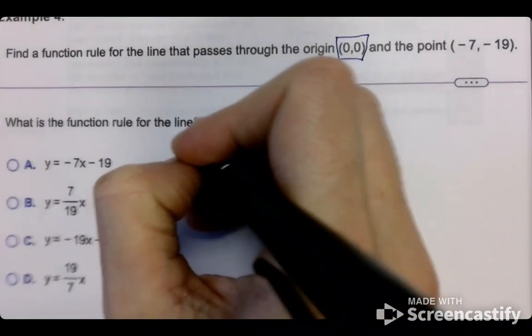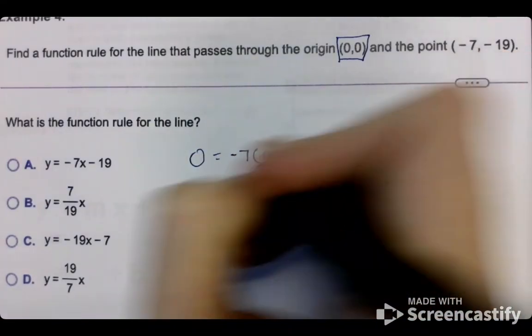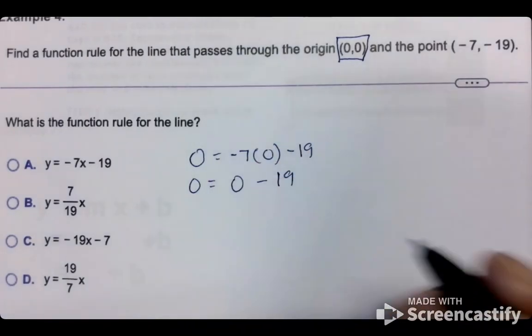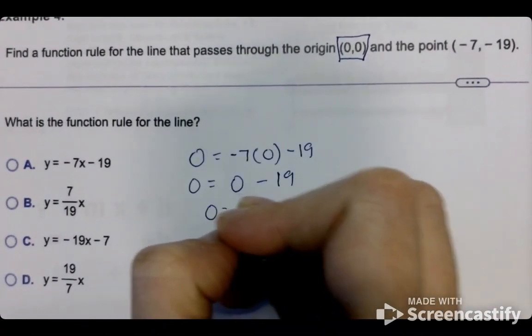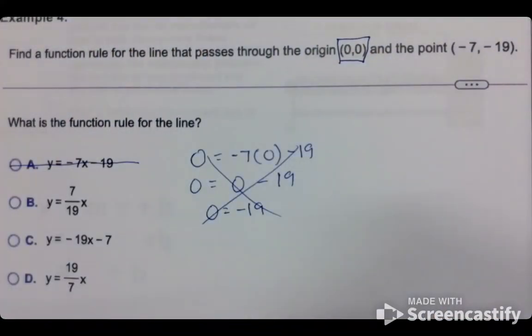So in place of Y, I'm going to put 0. Then I'm going to put 0 in place of X, and then I have minus 19. 0 equals 0 minus 19. Does 0 equal negative 19? No, it does not, which means that can't be the answer.